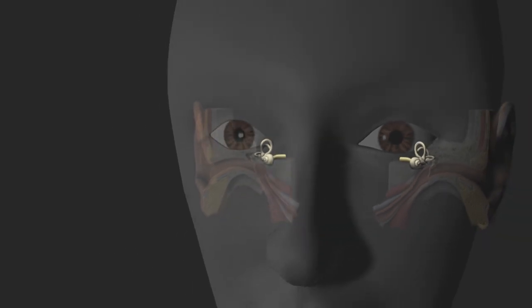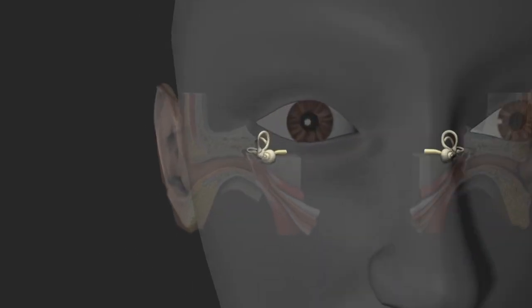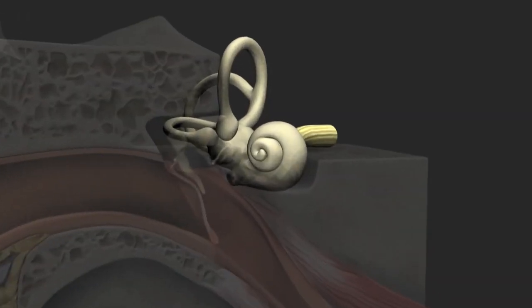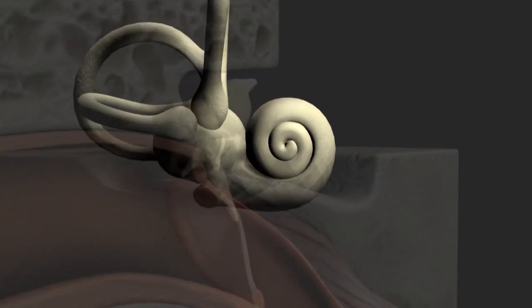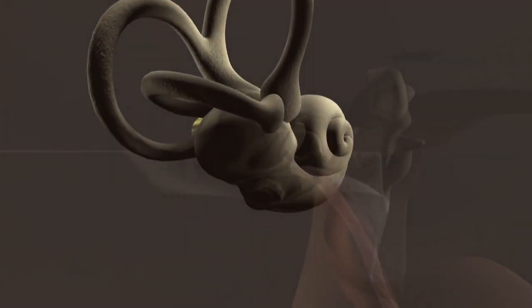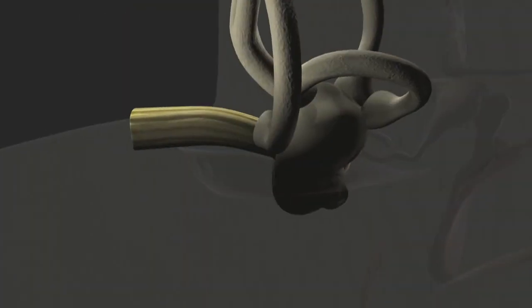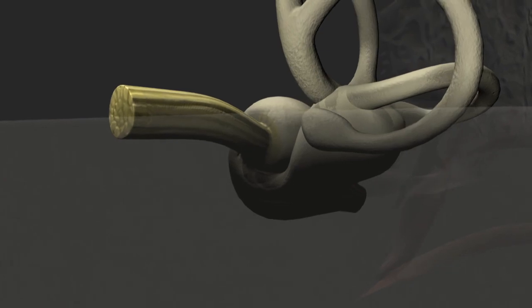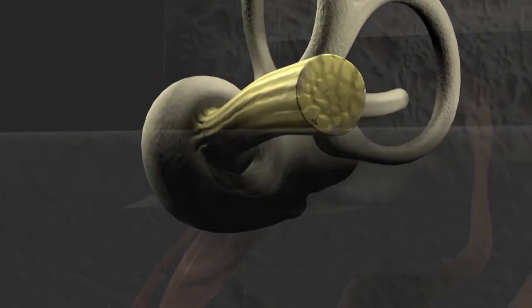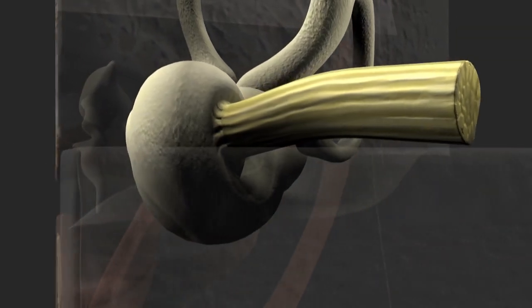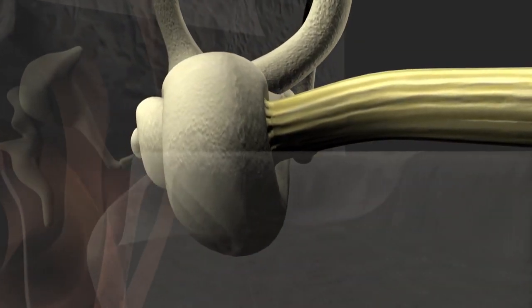The cochlea appears as a coiled tube in the shape of a snail shell with between two and a half and three quarter turns. It is wrapped around the acoustic portion of the auditory nerve. If we were to unravel the cochlea, it would be about 35 to 40 millimeters long.